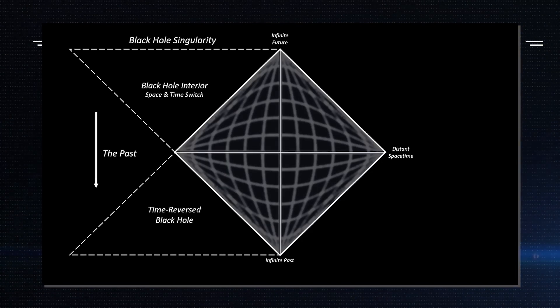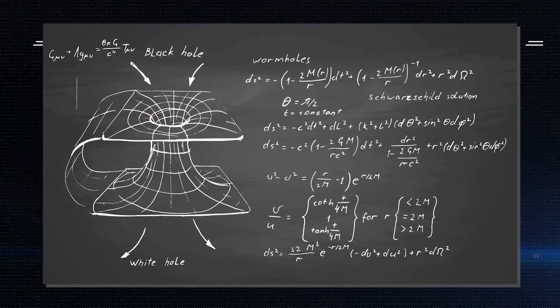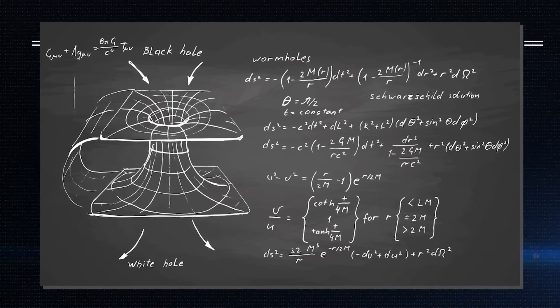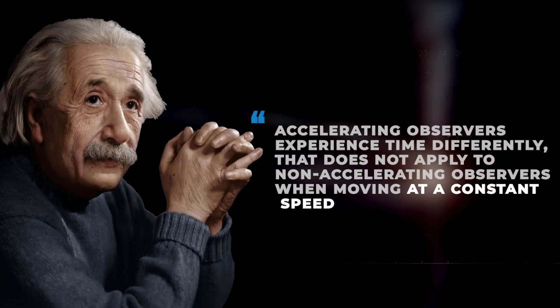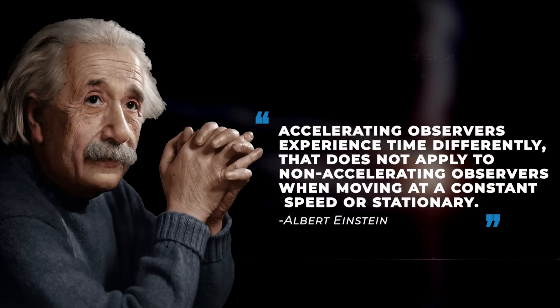As you may suspect, the theory of white holes was first found due to the mathematical fascination with black holes. In 1905, Albert Einstein realized that although accelerating observers experience time differently, that does not apply to non-accelerating observers.